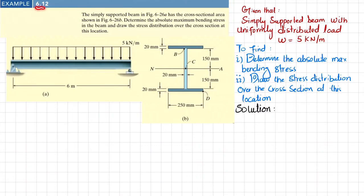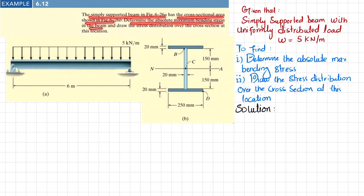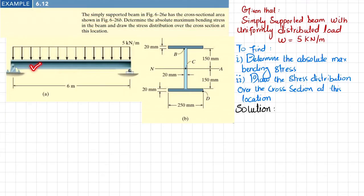Welcome back. Example 6.12 — the simply supported beam shown in the figure has the cross-sectional area shown. Determine the absolute maximum bending stress in the beam and draw the stress distribution over the cross section at this location. You can see this is a simply supported beam with a uniformly distributed load of 5 kilonewtons per meter.